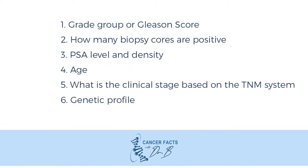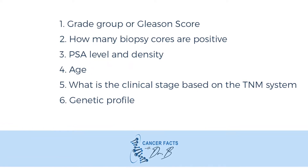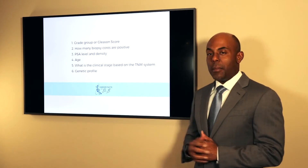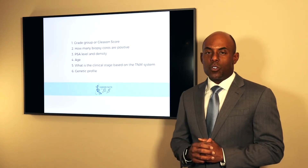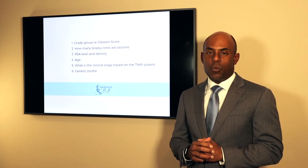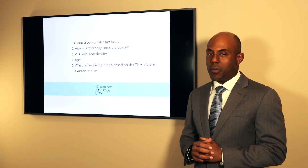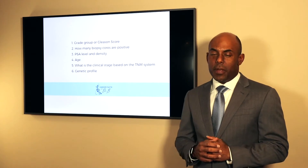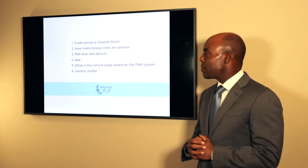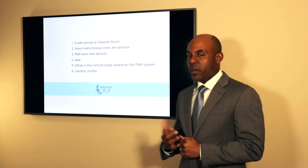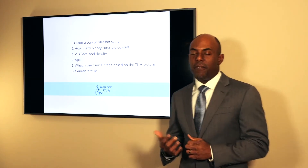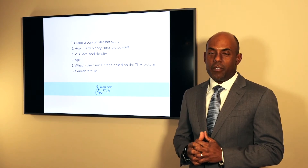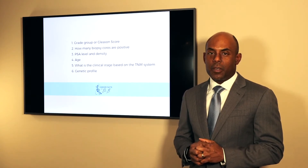One is the grade group, or the Gleason score. Two is how many biopsy cores were positive when they biopsied your prostate. Three is your PSA. Four, your age. And five, the T, N, and M staging of your cancer.